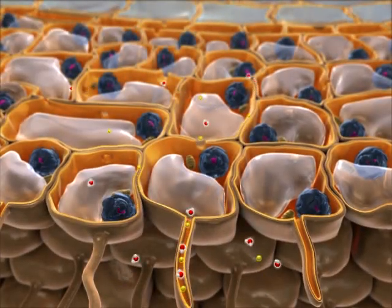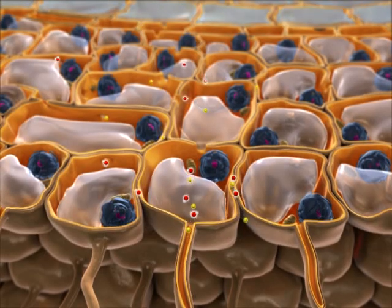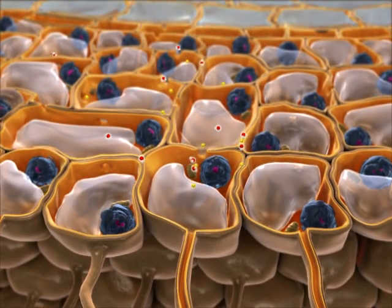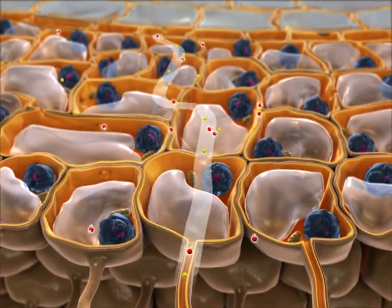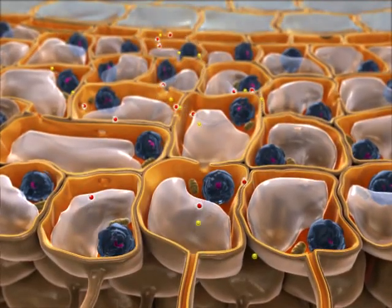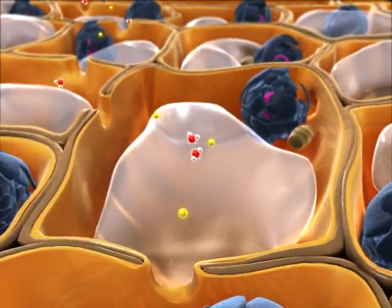Water and minerals, shown in yellow, can follow two paths from cell to cell within a root. In one path, they travel in the cytoplasm, which is connected between cells.